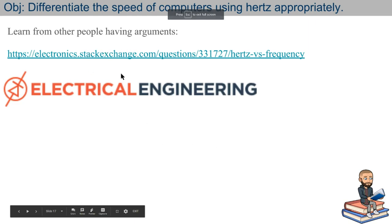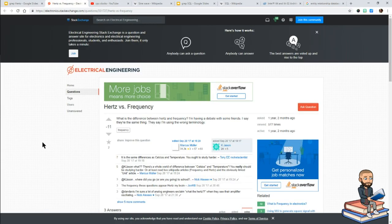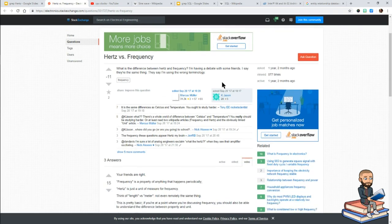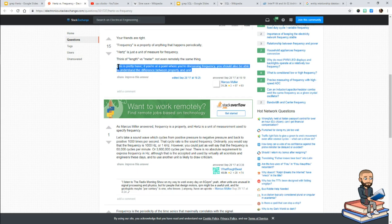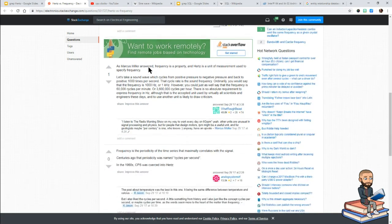If you're like me, you can learn a lot from watching other people have arguments. So I found a good one right here. The person says, what is the difference between hertz and frequency? I'm having a debate with some friends. Scroll down right here. There are some really educational things that people say in their answers. I like this third line. It says, think of length versus meter. Not even remotely the same thing. I mean, I don't agree with that. But what they're saying is, hertz is like meter, and frequency is like length. Hertz is the number of things you use to measure frequency. And then the person's really rude. This is pretty basic if you're at the point where you're discussing frequency. You should also be able to understand the difference between property and unit, like why the unnecessary insult. Just help the guy learn, please.